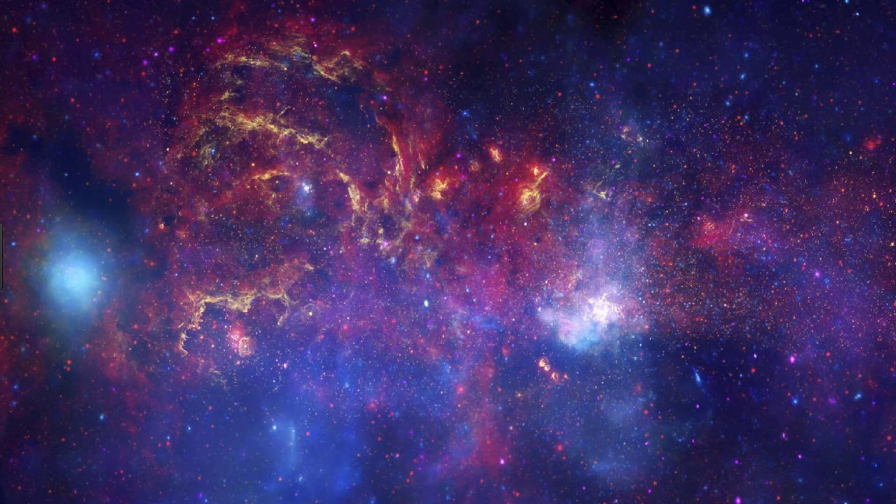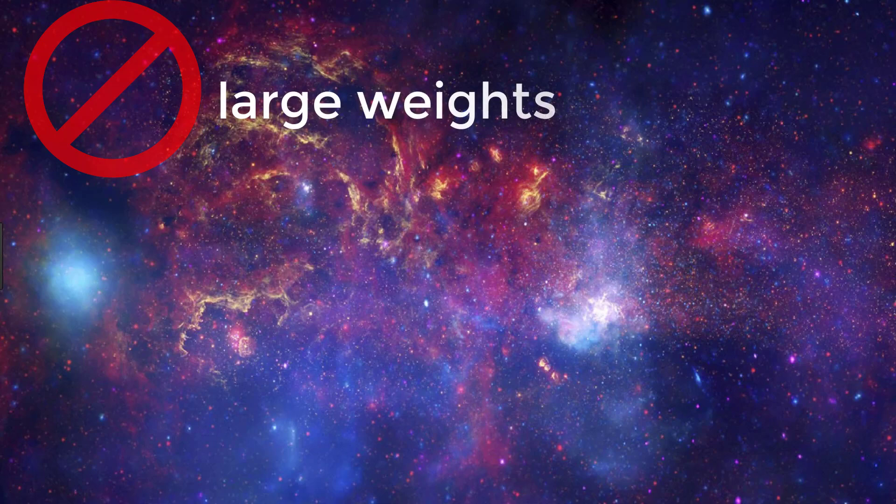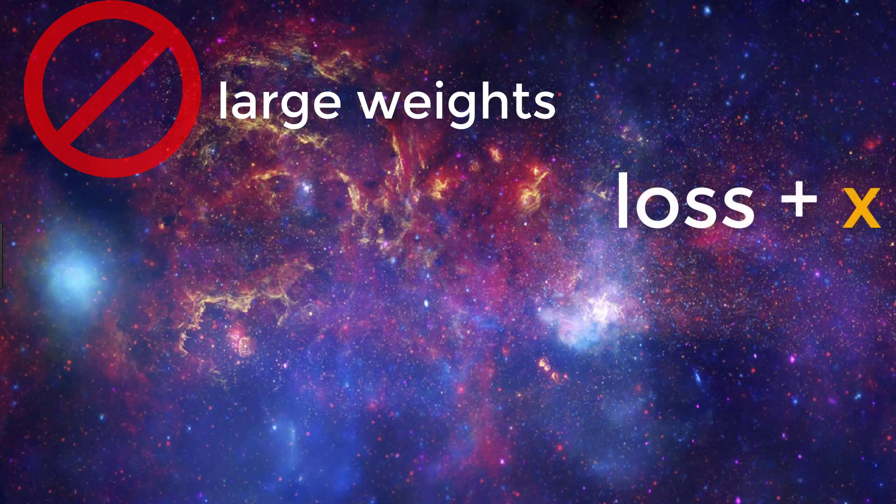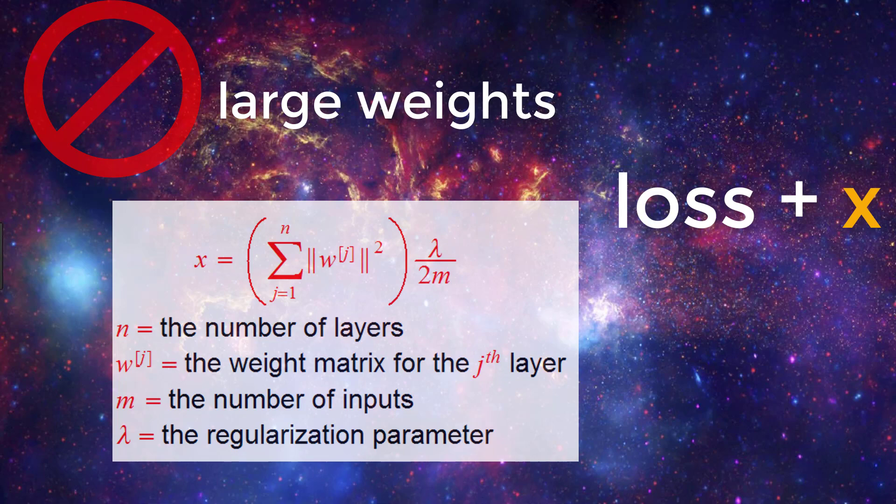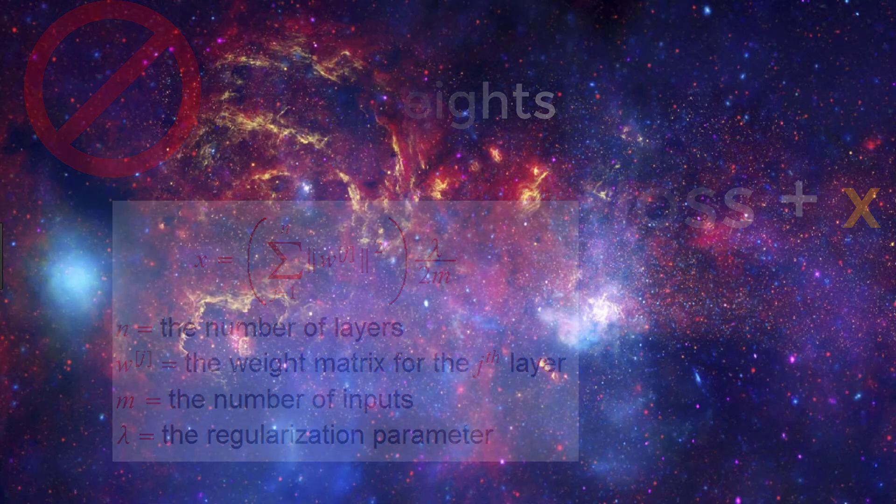So to summarize, we know that regularization is just a technique that penalizes for relatively large weights in our model. And behind the scenes, the implementation of regularization is just the addition of a term to our existing loss function. With L2 regularization, we saw that this term is the sum of the squared norms of our weight matrices that is then added to the regularization parameter, lambda, divided by 2 times our input.